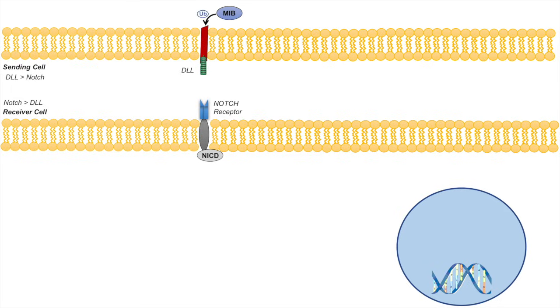MindBomb actually ubiquinates the delta-like ligand in order for it to become activated. Once the delta-like ligand has become ubiquinated, it becomes activated and can then bind to the extracellular domain of the notch receptor.